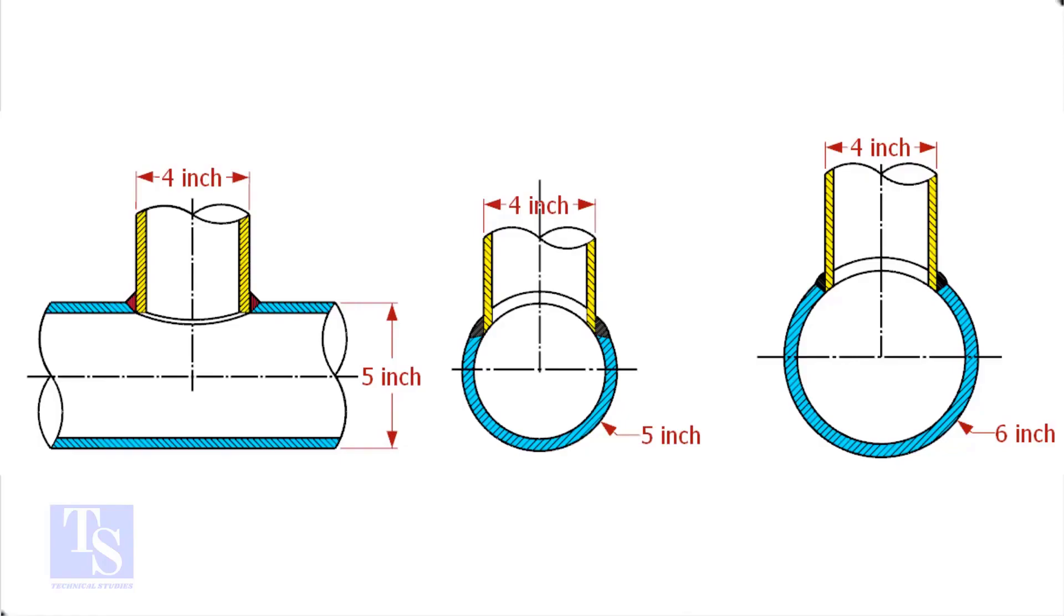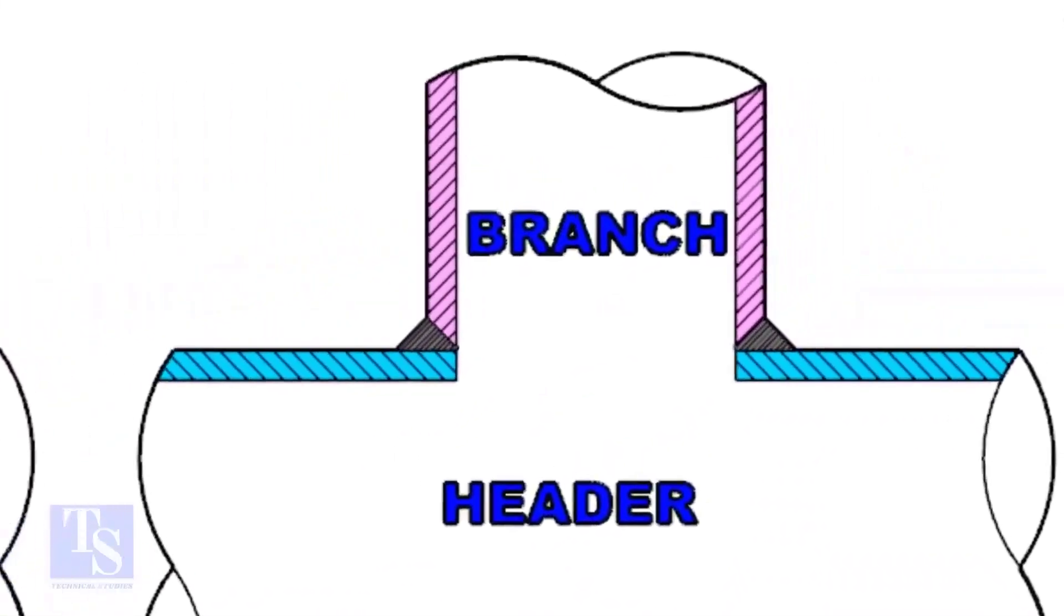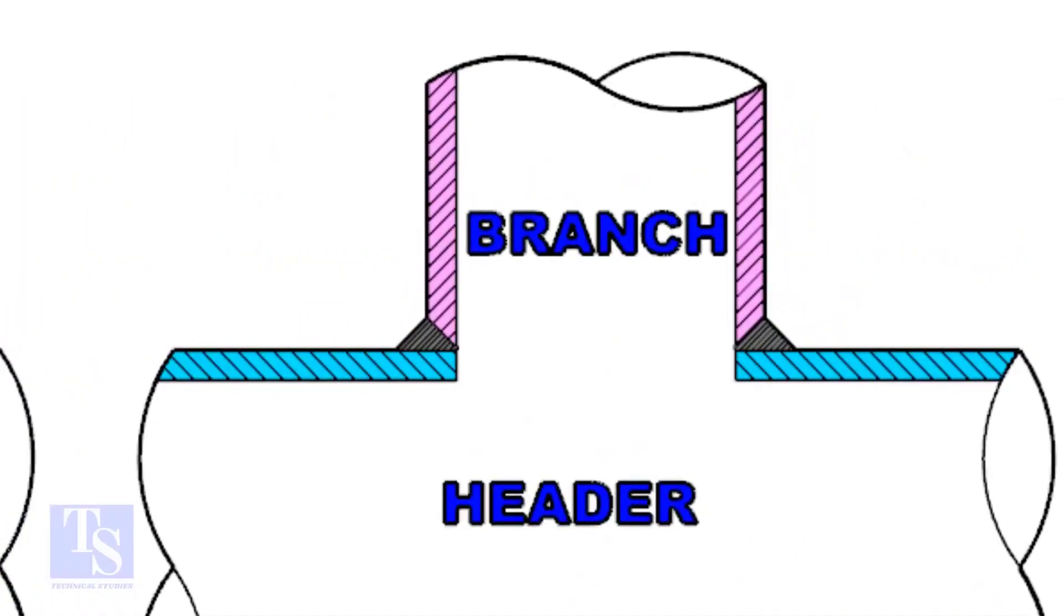Watch the section side view carefully. Check the stub-on view. The branch pipe sits on the header. The cut-back cutting of the branch pipe is done and the bevel also is prepared.